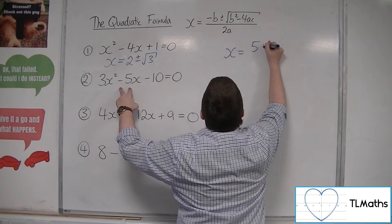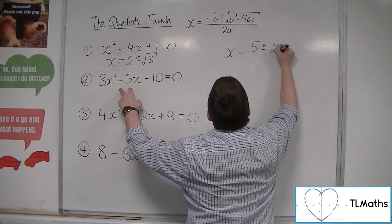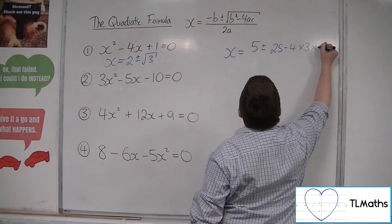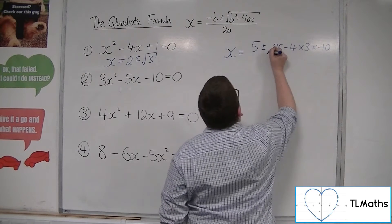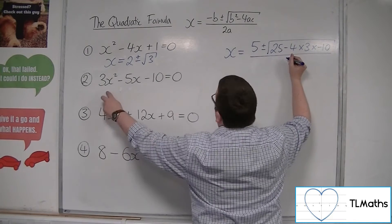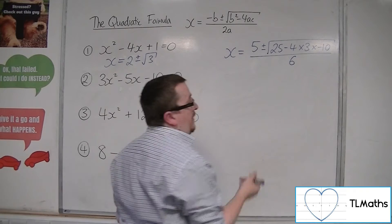Plus or minus b squared, so 25, take away 4 times a, which is 3, times c, which is minus 10, square rooted all over 2a, so 2 lots of 3, which is 6.